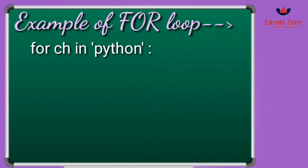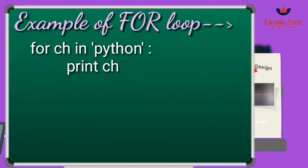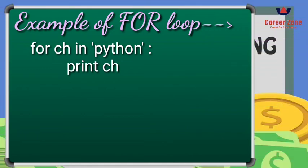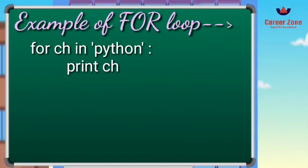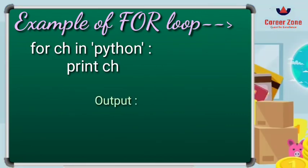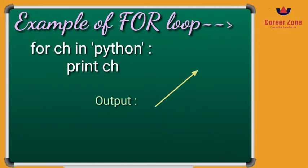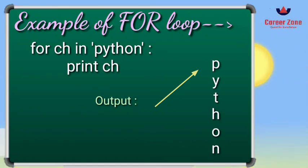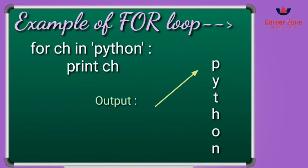Let's see another example of a for loop using a string. I have written: for ch in 'python': print(ch). Here ch is the variable name which will read each character from the string one by one in sequence, and each will be printed in order — p, then y, then t, then h, then o, then n. This is how the for loop works with strings.